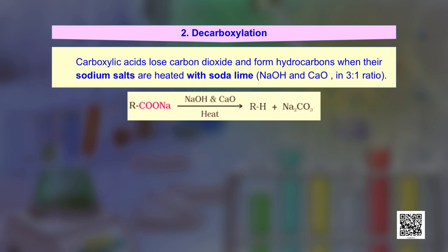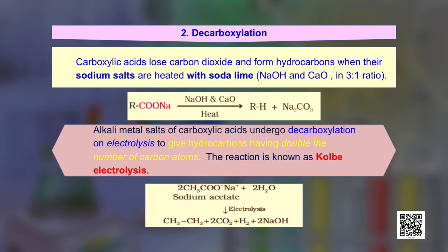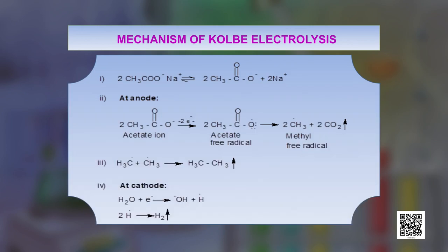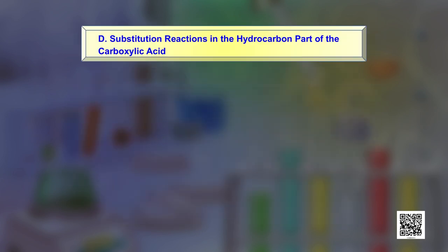Alkali metal salts of carboxylic acids also undergo decarboxylation on electrolysis, giving hydrocarbons with double the number of carbon atoms — this is known as the Kolbe reaction. The mechanism involves formation of intermediate free radicals which ultimately combine to give an alkane with double the number of carbon atoms.